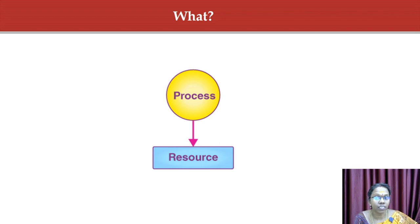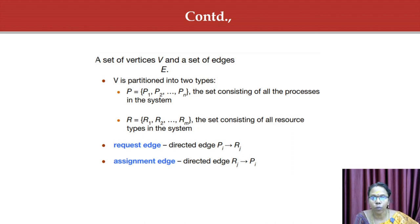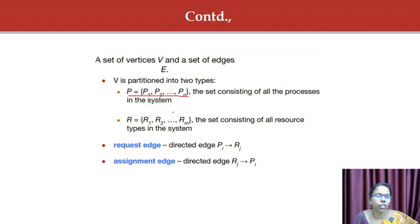The necessary conditions for arising deadlocks are already covered in a previous video in this playlist. Now consider this graph. It consists of a set of vertices V and a set of edges E. The set V is partitioned into two types: P, which describes all the processes in the system, and R, which describes all the resource types in the system.